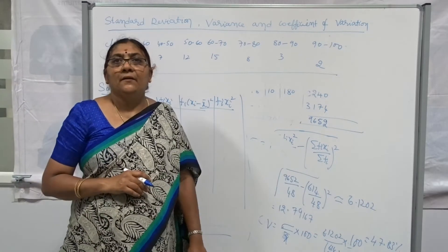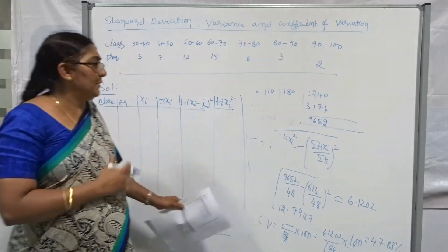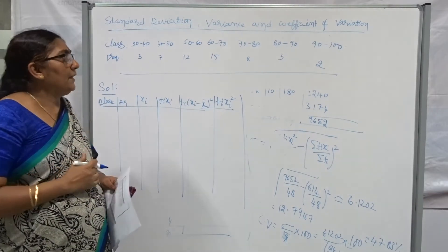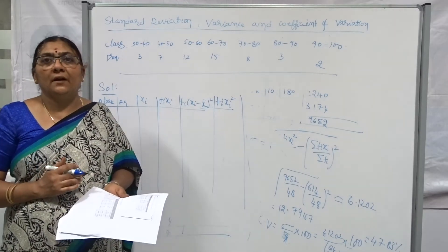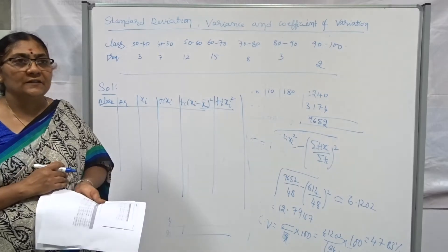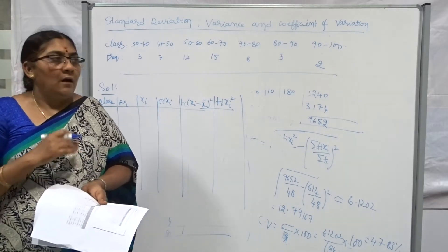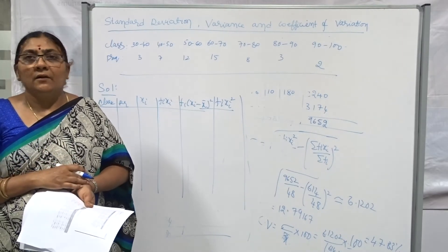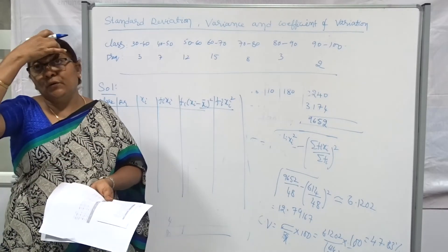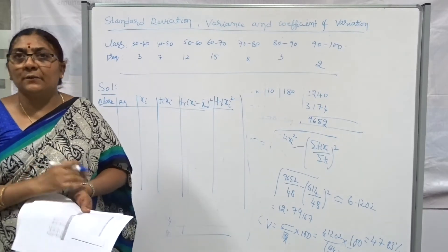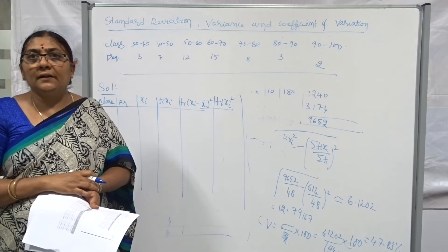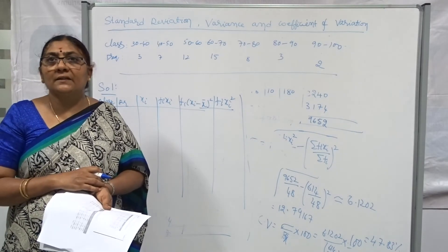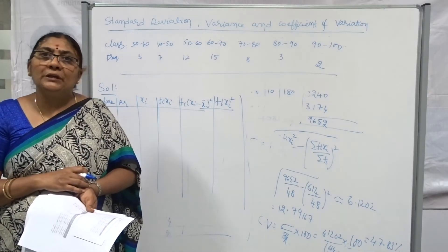Just work up to the discrete frequency distribution on the board. Once again I am going to inform: this coefficient of variation is used to compare more than one set of data — which one is more reliable, which one is more consistent. They use it in factory settings, or maybe in cricket player comparisons, or if we want to compare student marks — also we are going to use that. I will come and do that type of problem in my next class — how to compare and determine which one is more reliable and more consistent.